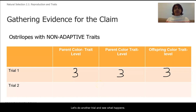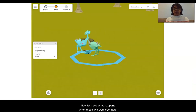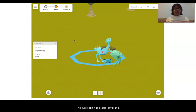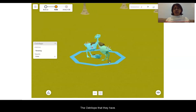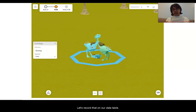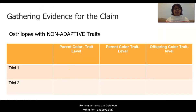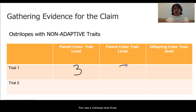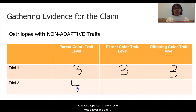Let's do another trial and see what happens. This ostrilope has a color level of four and this ostrilope has a color level of one. The offspring they produced is a color level of one. Let's record that on our data table. Remember, these are ostrilopes with non-adaptive traits. Our first pair was level three and level three, producing a level three offspring. The second pair was level four and level one, producing a level one offspring.